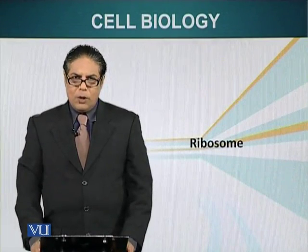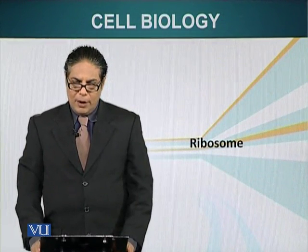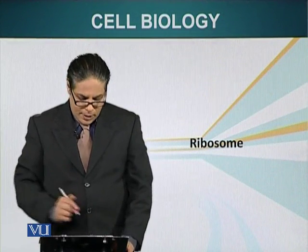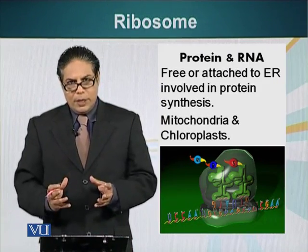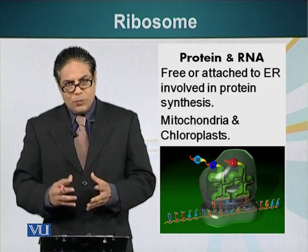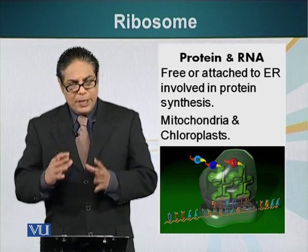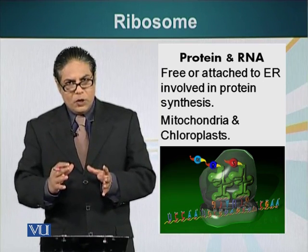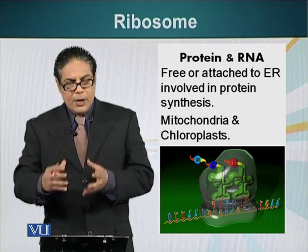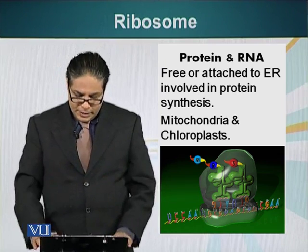In this module, we will talk about a special type of organelle which does not have a membrane around it: the ribosome. Ribosomes are made up of two subunits, the large subunit and the small subunit. These organelles are basically responsible for translating the language of nucleotides into the language of proteins or amino acids.